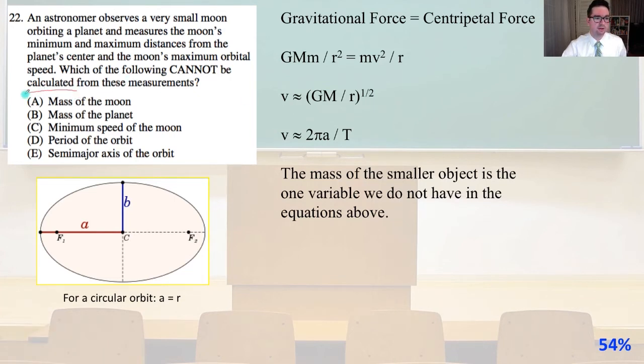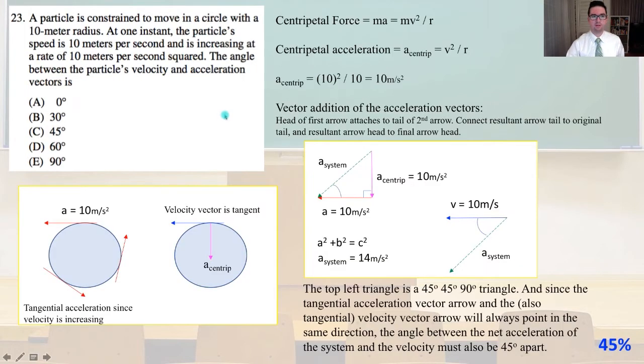Number 23. A particle is constrained to move in a circle with a 10 meter radius. At one instant, the particle's speed is 10 meters per second, and it is increasing at a rate of 10 meters per second squared. The angle between the particle's velocity and acceleration vector is. Our centripetal force equals ma equals mv squared over r. Our centripetal acceleration, a centripetal, equals v squared over r. So a centripetal equals 10 squared over 10 equals 10 meters per second squared.